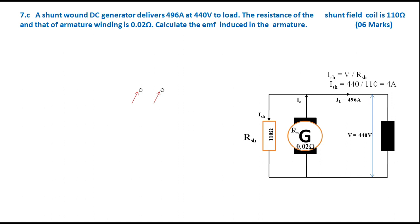Question 7c is on a DC shunt generator. Given: the generator delivers a load current of 496 amperes at 440 volts terminal voltage; shunt field resistance is 110 ohms; armature winding resistance is 0.02 ohms. You are asked to find the EMF generated in the armature. The equation for generated EMF is: E = V + IaRa + brush drop + voltage reduction due to armature reaction. Since brush drop and armature reaction are not given, they are taken as zero, giving E = V + IaRa.